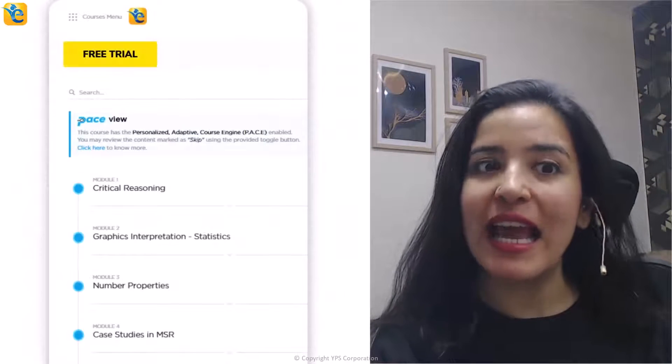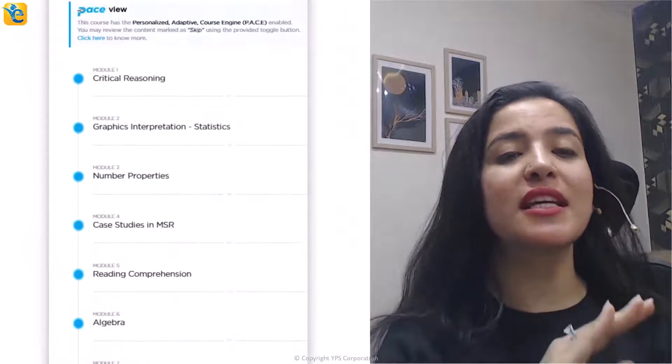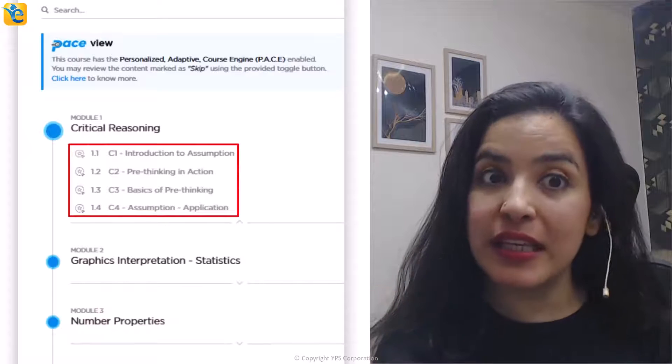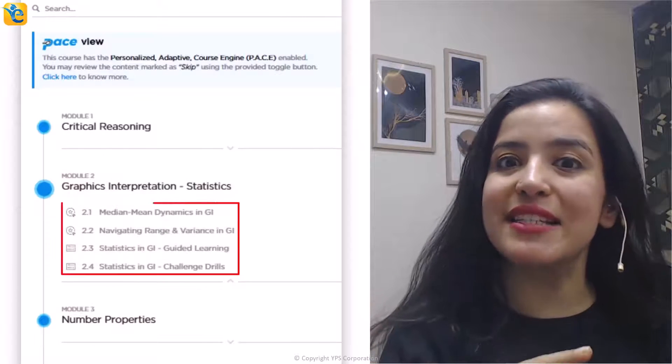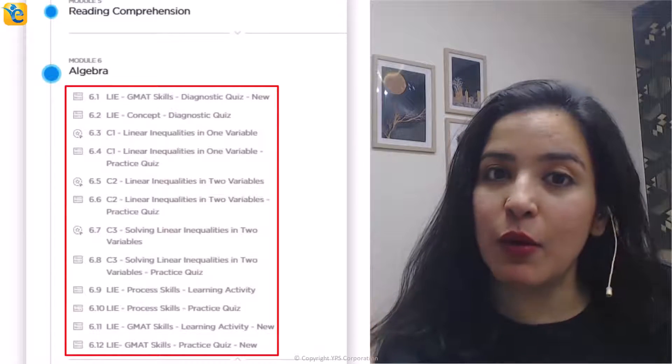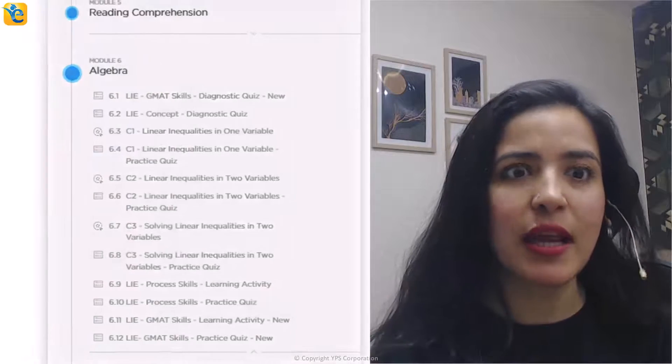If you found the analysis of this data set helpful, then hit that like button so that other GMAT aspirants can also learn from it. To stay tuned with such content, hit the subscribe button below. To take your learning to the next level, we have put together a free trial in which you can experience content in all the sections tested on GMAT Focus Edition. For example, you can build your CR pre-thinking skills, learn how to approach statistics questions in graphics interpretation as part of DI, learn everything about linear inequalities as tested on the GMAT Focus Edition and a lot of other content. The link for this is in the description.